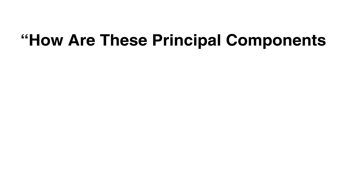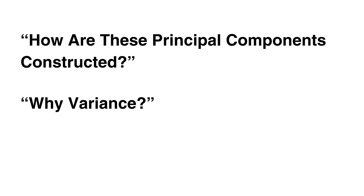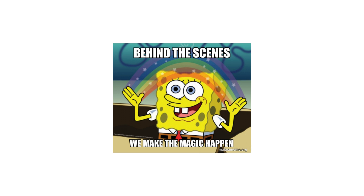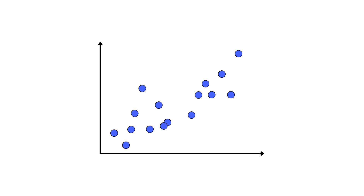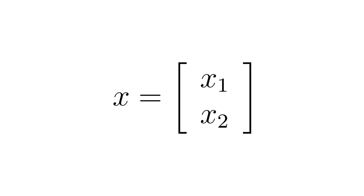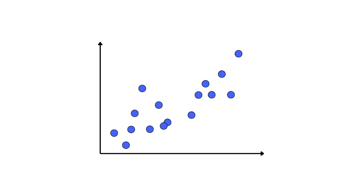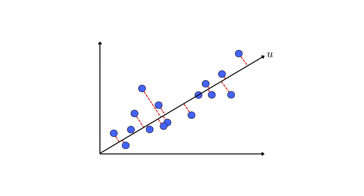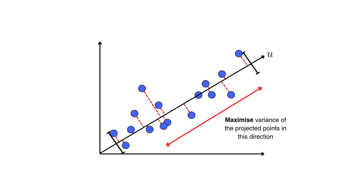Now all of this naturally leads to a deeper question: how are these principal components actually constructed, and why is variance the thing we're trying to capture in the first place? To answer that, let's look at what PCA is really doing behind the scenes. Imagine each data sample as a point in a p-dimensional space. For simplicity, consider the case where p equals 2, meaning each sample has two attributes and can be represented as a vector x, where x1 is its value for attribute 1 and x2 is its value for attribute 2.